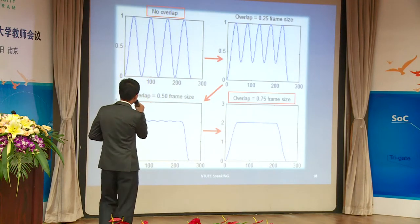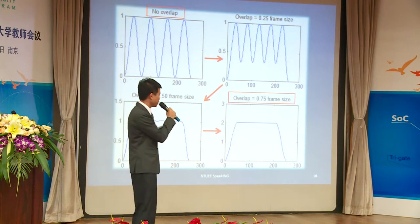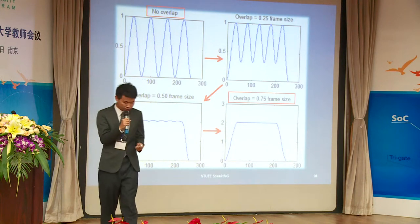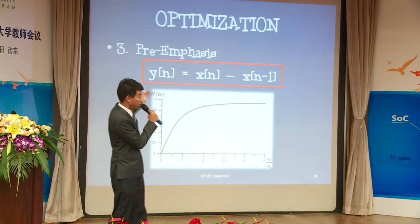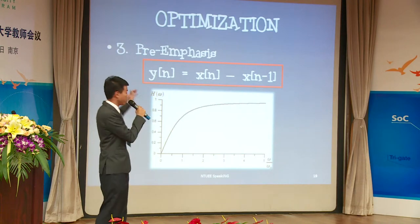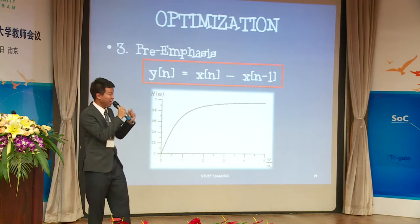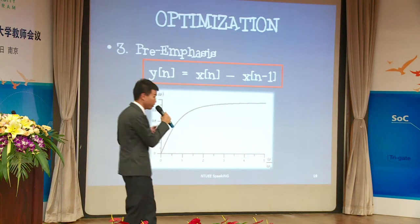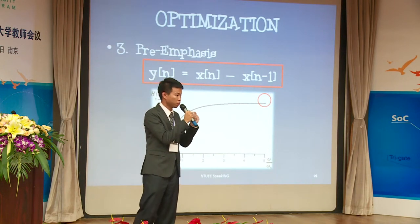What does it mean? As you can see, the more we overlap, the less the amplitude variation from the Hanning Window — so we choose 75% overlap. The third optimization we use is pre-emphasis. We apply this equation to our vocal signal in the time domain, and the transfer function looks like a high-pass filter. It emphasizes the high-frequency part and de-emphasizes the low-frequency part, which allows us to enhance every consonant more clearly.